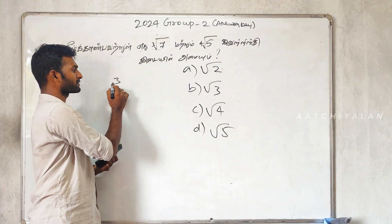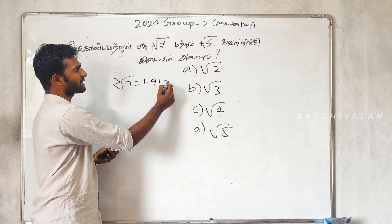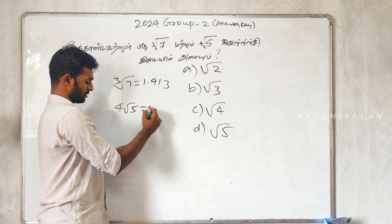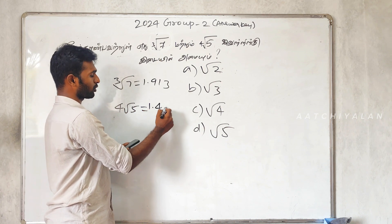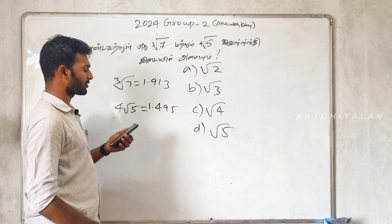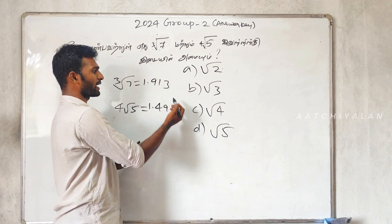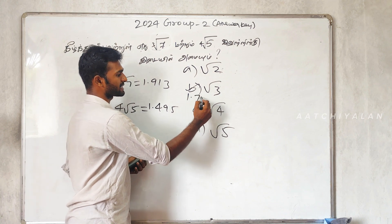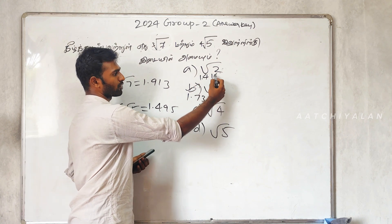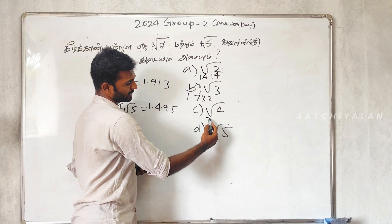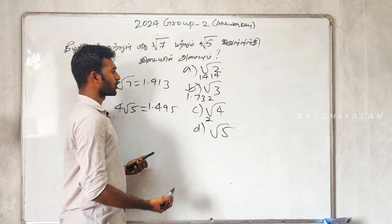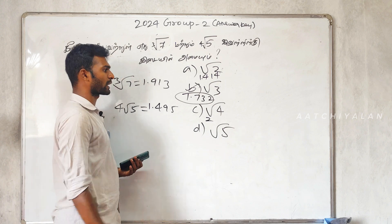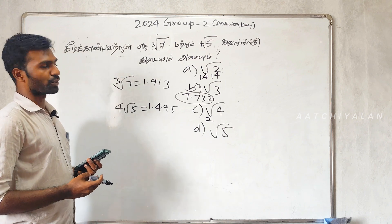1.7, cube root of 7 — one value is 1.913. 4th root of 5 is 1.495. In the 2nd value: root 3 is 1.732, root 2 is 1.414, root 4 is 2. So the largest value is 1.732 — the answer is square root of 3.